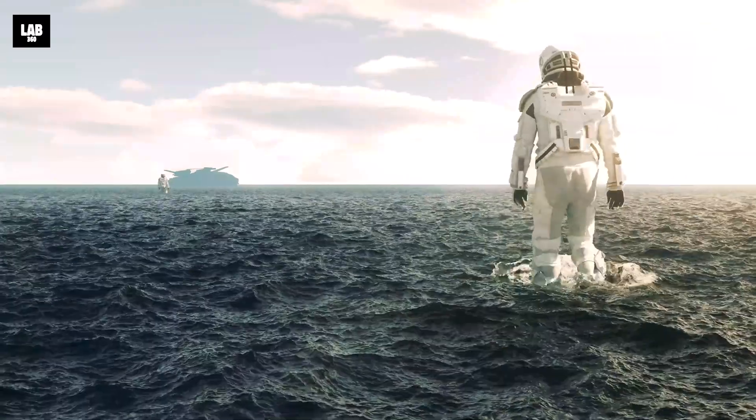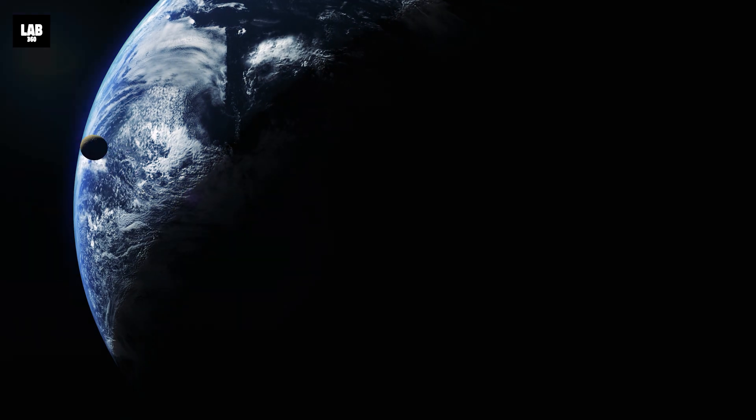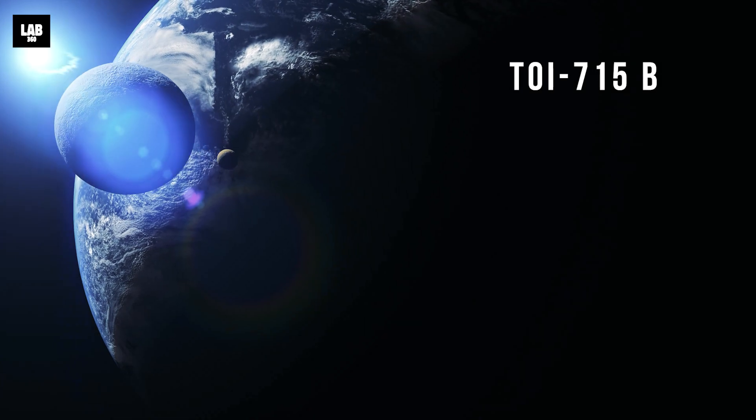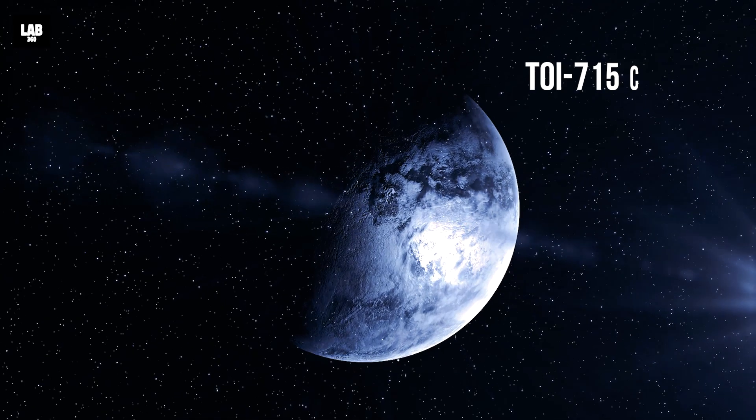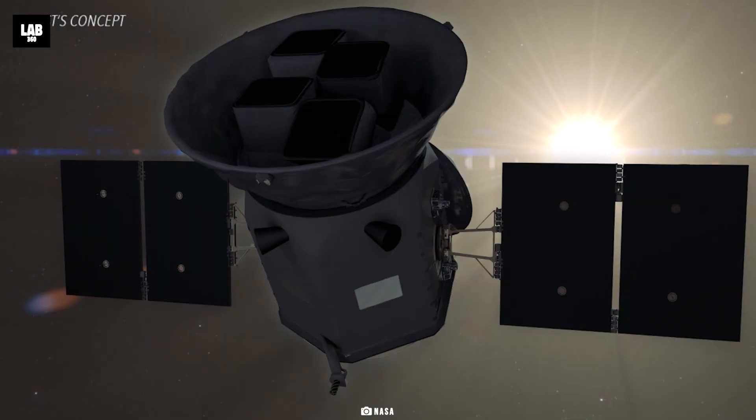Scientists will attempt to confirm the existence of a smaller Earth-sized planet very close to the super Earth TOI-715 b. They plan to name this TOI-715 c, and if confirmed, it will be the smallest world ever detected by TESS.